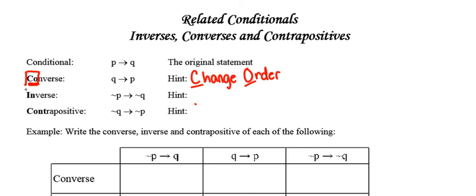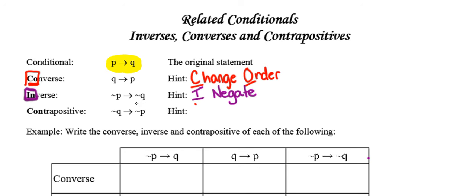In order to obtain the inverse, the hint is right there in the word — I-N. The first two letters stand for 'I negate.' So to write the inverse, we go back to the original statement — we always go back to the original conditional — and we negate each piece. Negating the hypothesis gives us not P; negating the conclusion gives us not Q. So the inverse of 'if P, then Q' is 'if not P, then not Q.'